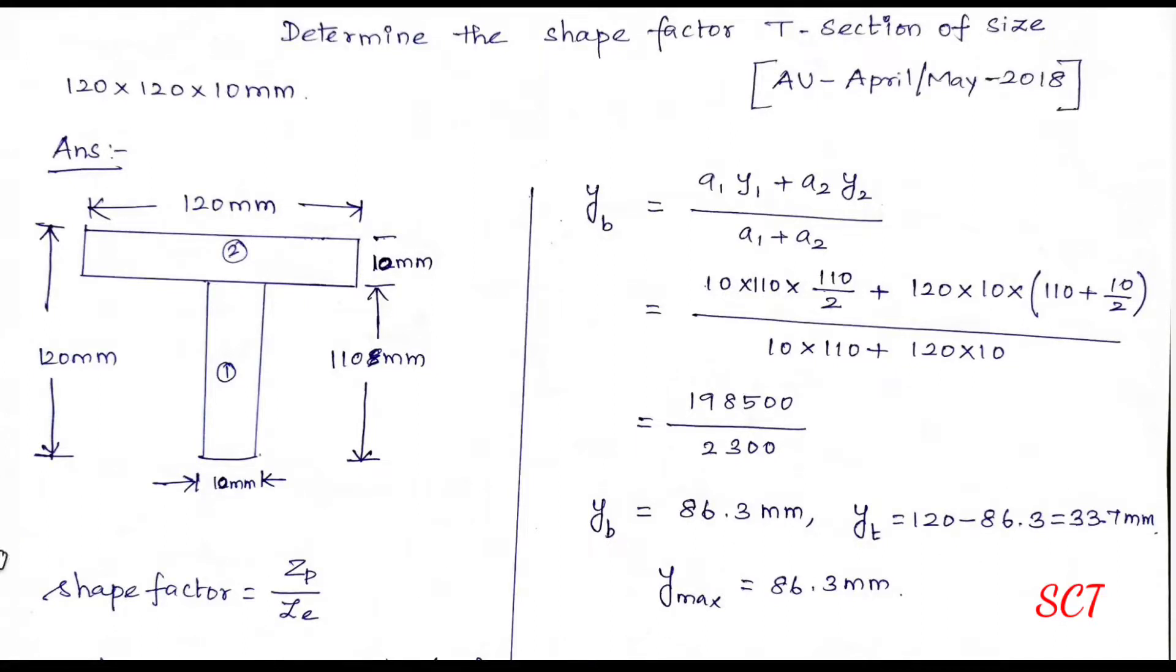Hello friends, next is T-section of this model sum. If you look at this question, Anna University in April 2018. Determine the shape factor for T-section of a size 120 by 120 by 10 mm. So this is 120, depth is 120, thickness is 10 mm. Let's take a simple question.